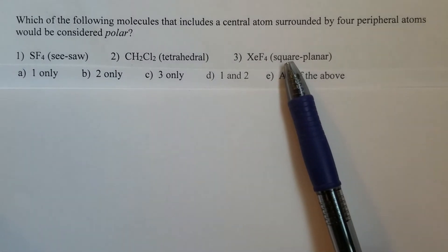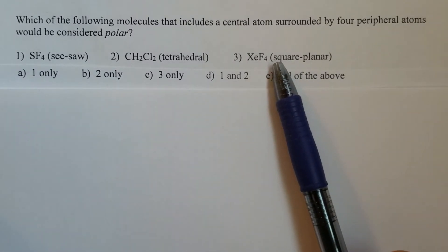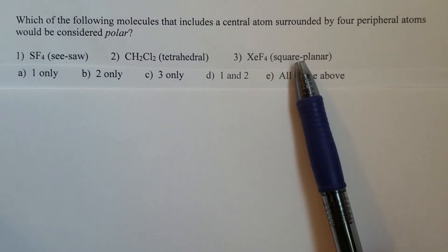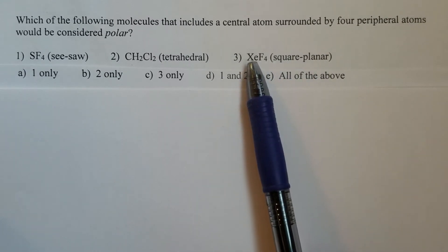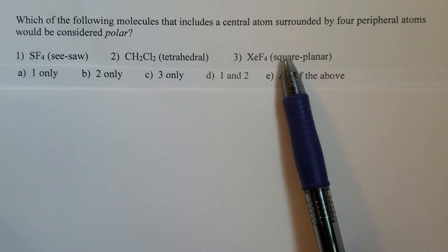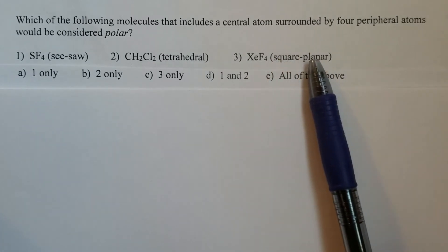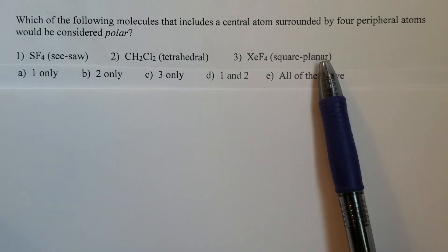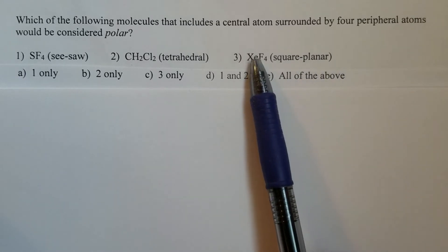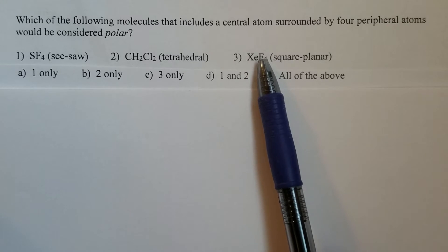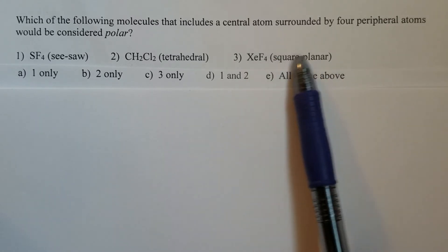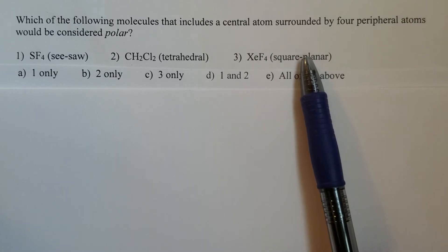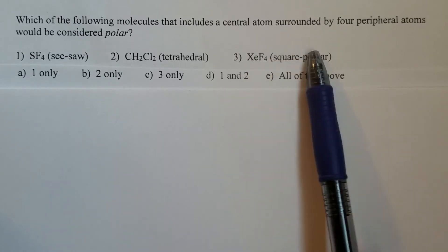If the molecular geometry is symmetrical, like in xenon tetrafluoride square planar, that is a symmetrical geometry. So therefore, even though each xenon-fluorine bond is polar, the entire molecule is non-polar because it's symmetrical.